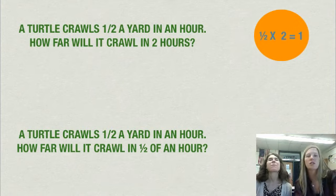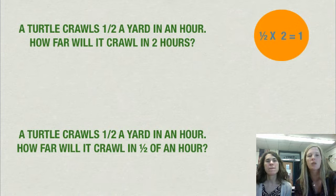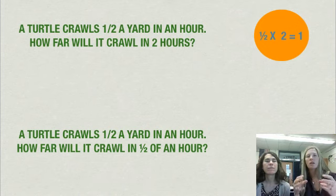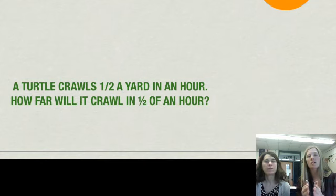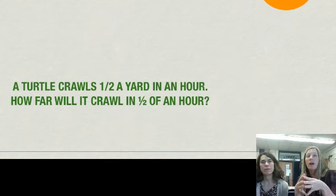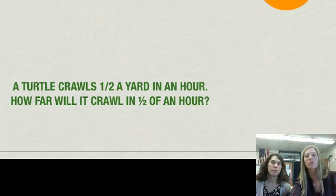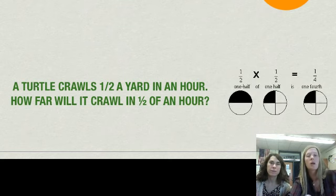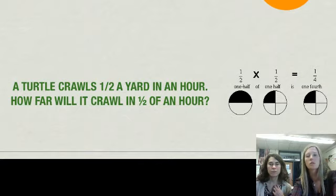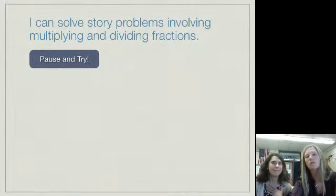A turtle crawls half a yard in an hour. Again, same thing. How far will it crawl in half an hour? I'm still taking of something. This time, instead of it being a half of two hours, I'm taking a half of a half an hour. So, I'm still multiplying. I'm just multiplying fractions. One half of one half is the same thing as saying one half times one half. And then once you have that set up, hopefully it's really easy for you to just multiply straight across. That is our example.